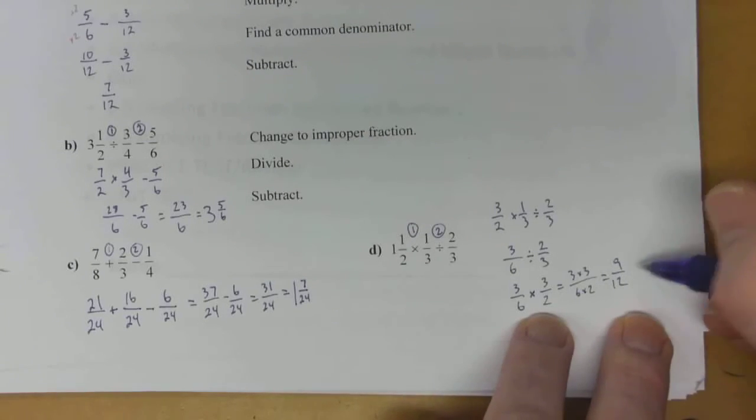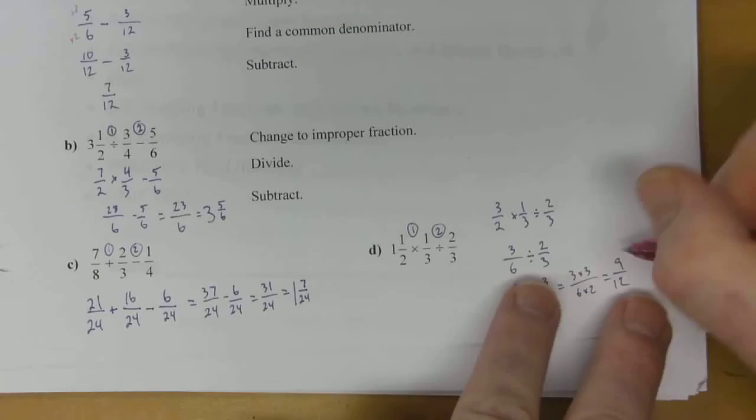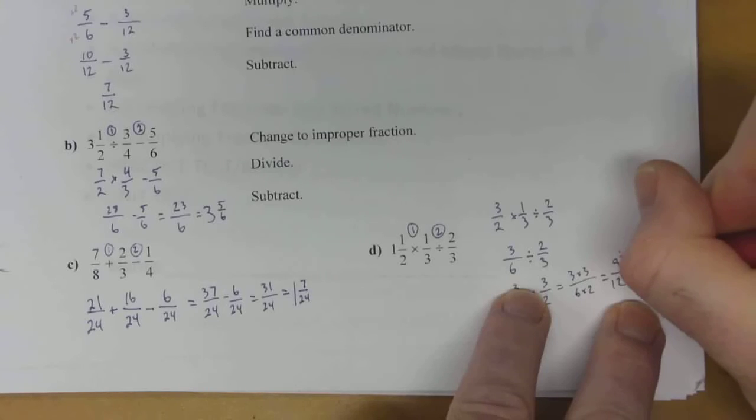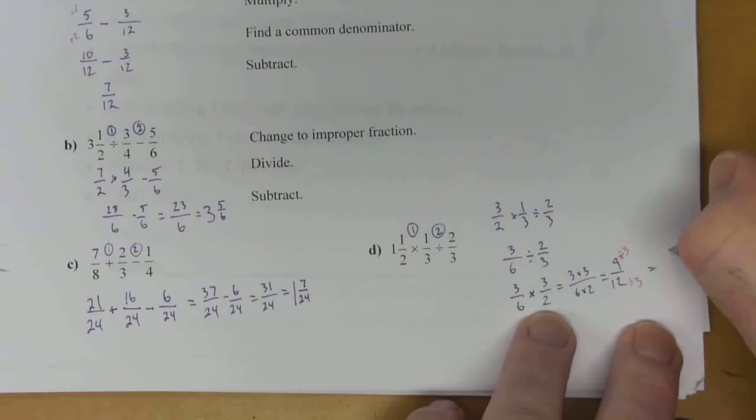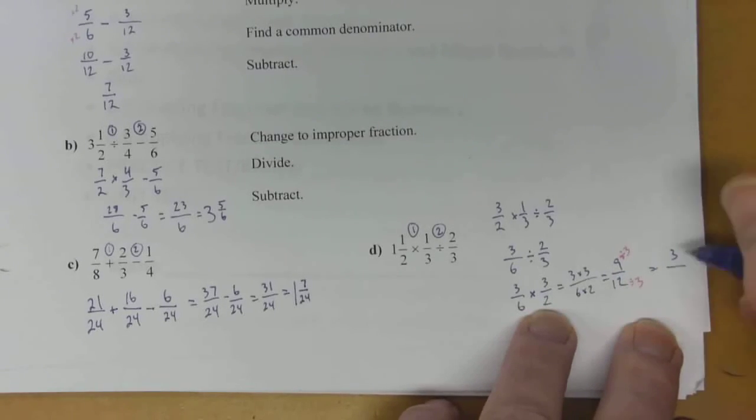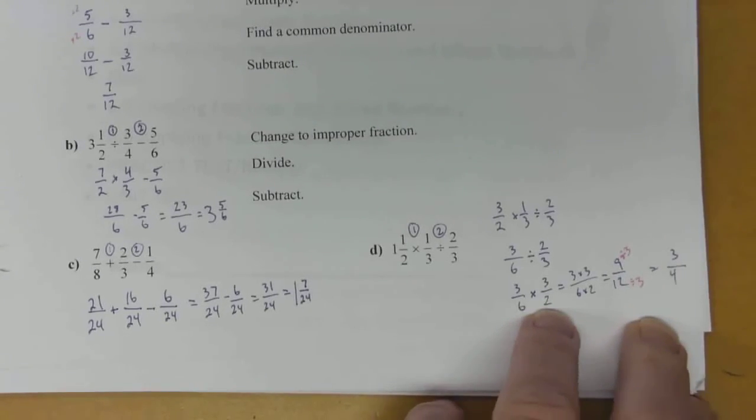Top and bottom can both be divided by 3. So try and get to the lowest terms. 9 divided by 3 is 3. 12 divided by 3 is 4. And that's your answer on that one.